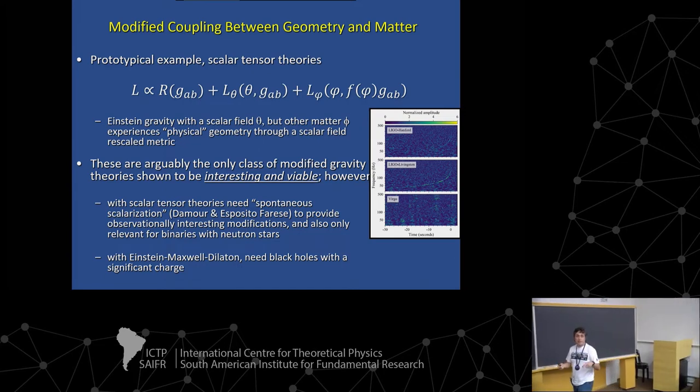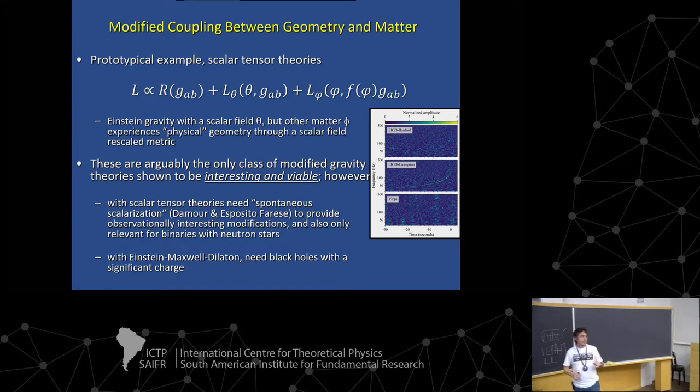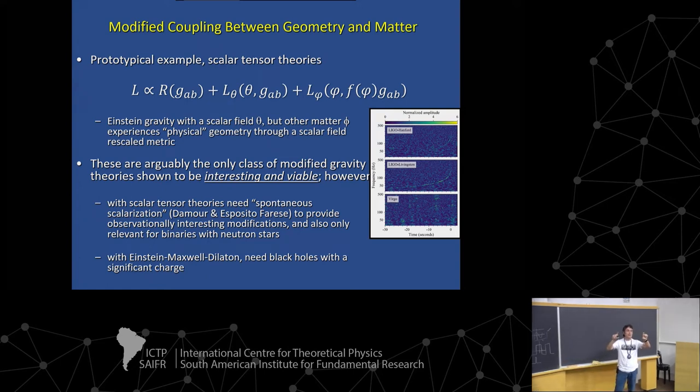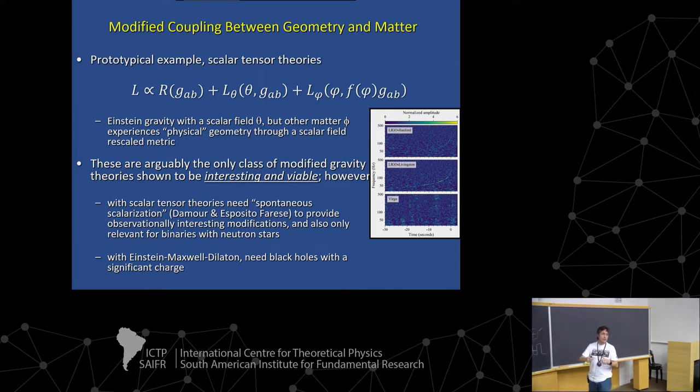Non-linear studies pointed out that there was another interesting phenomena. Even when you could have two different stars with two different masses, which the linear studies will predict will have different effects. As these stars are getting closer and closer to each other, there's a feedback, non-linear feedback mechanism, that eventually matches the effective charges, the scalar charges in these two stars, regardless of what the individual masses are. And that shuts off dipole radiation.